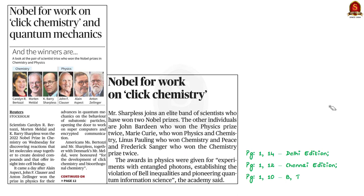Today, we are going to start our discussion with this front page article. It talks about two Nobel Prizes — one for physics and the other for chemistry. Three scientists have won Nobel Prize in chemistry for the discovery of click chemistry, and three other scientists have won the prize in physics for their advances in quantum mechanics. This is about the news article given here.